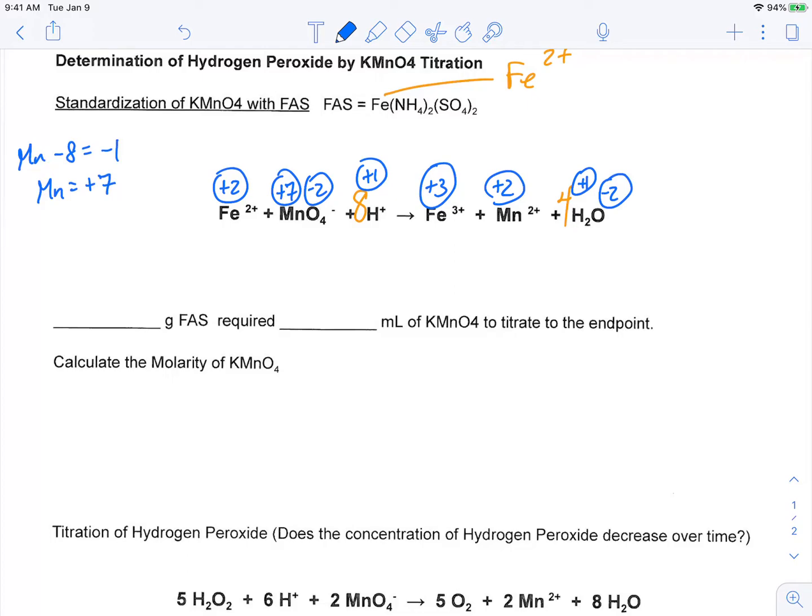So once we've done that, we can evaluate what's happening in terms of what's changing oxidation number. We see that the iron is going from 2+ to 3+, so that means it's losing one electron in that process, which is oxidation. And then we look at the manganese, and it's going from +7 to +2, so that means it's gaining five electrons.